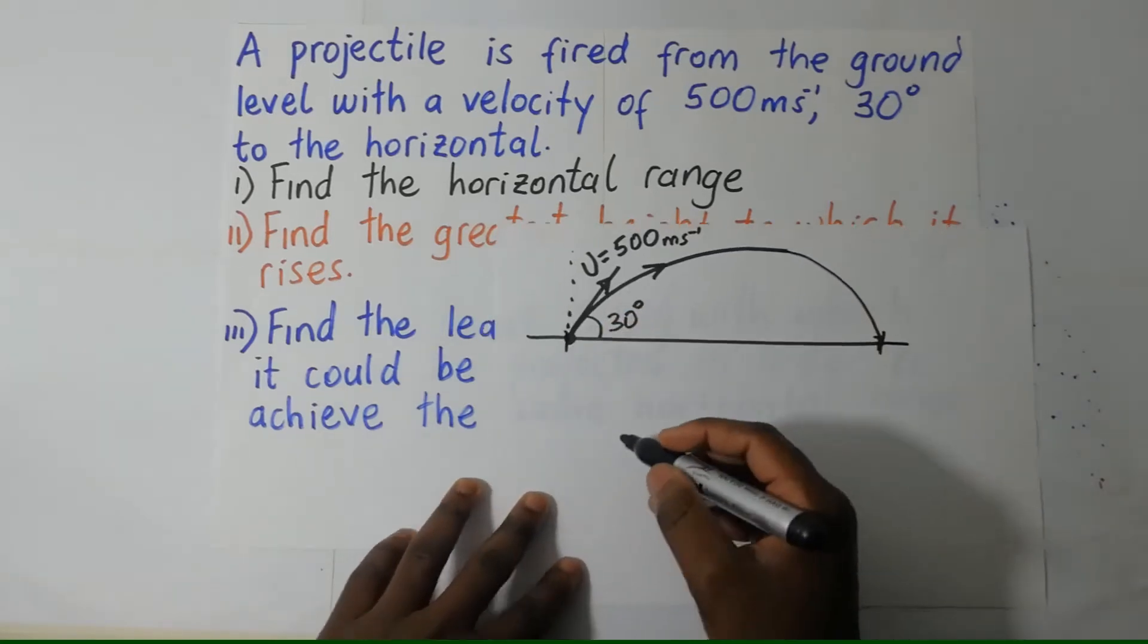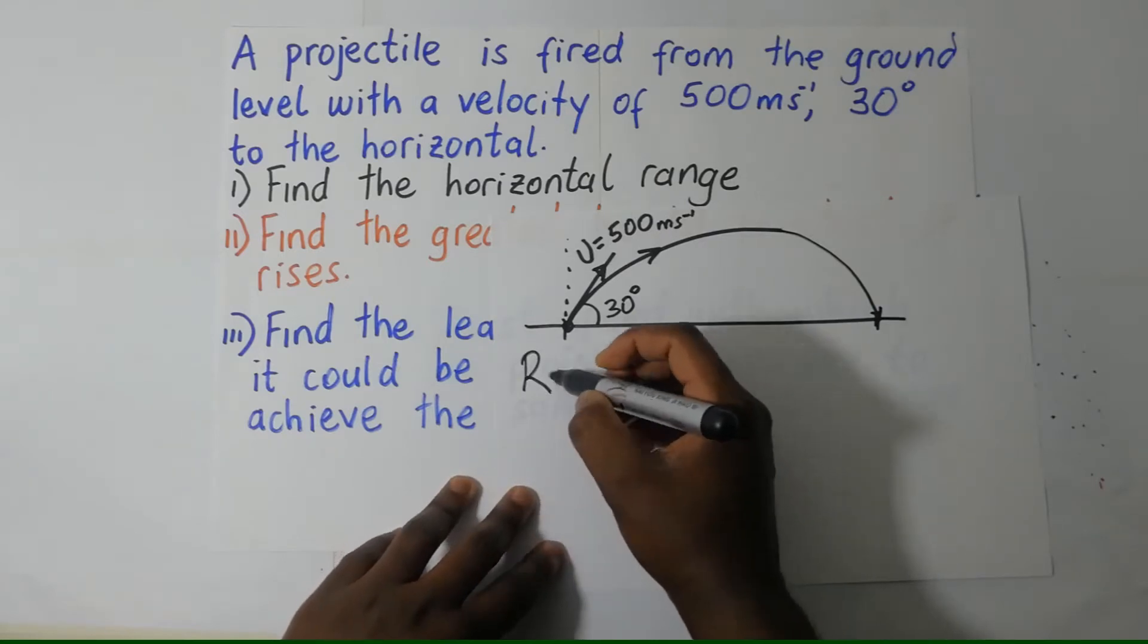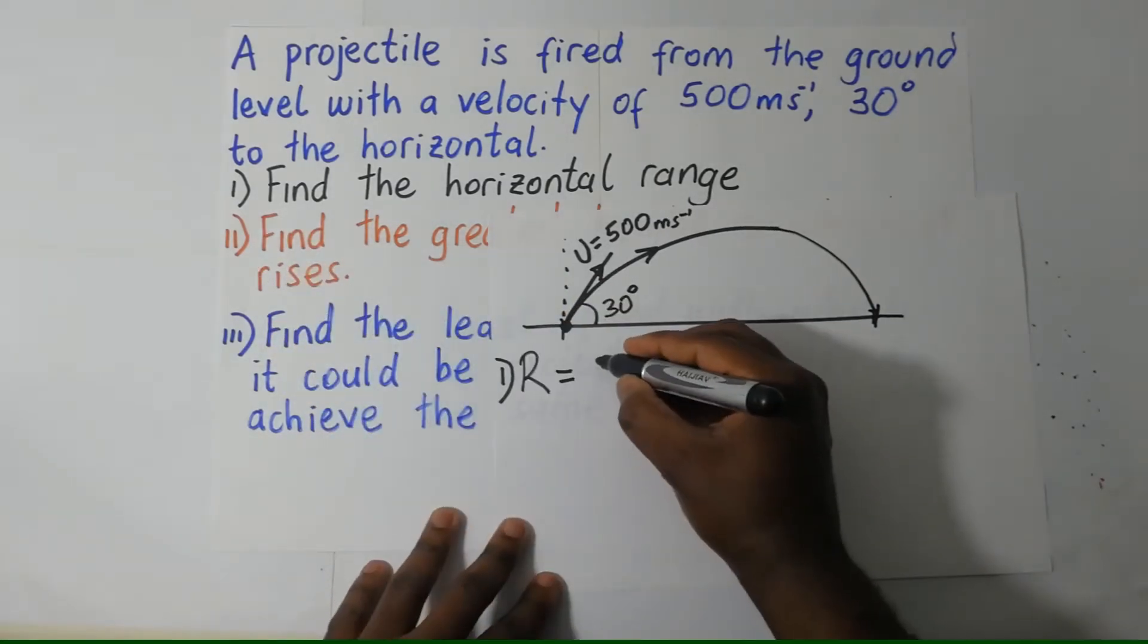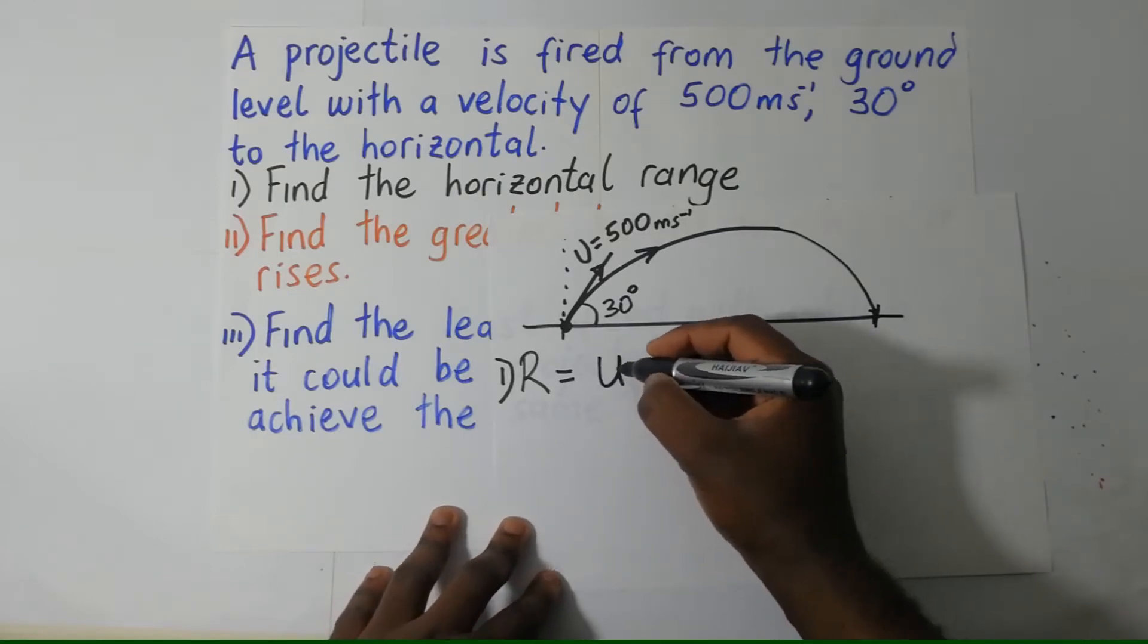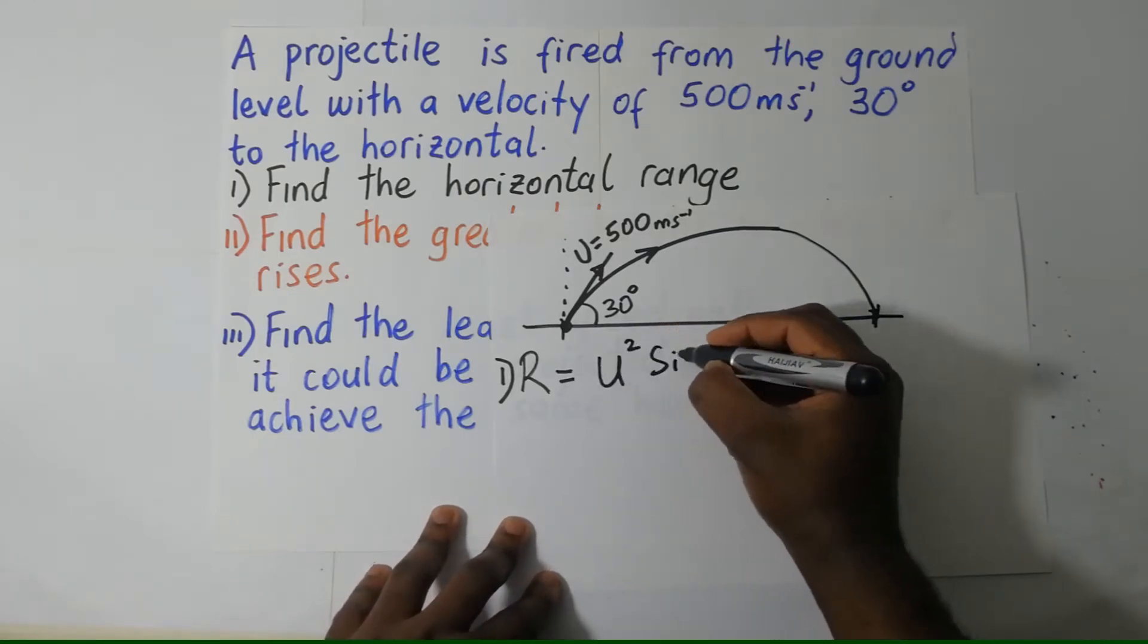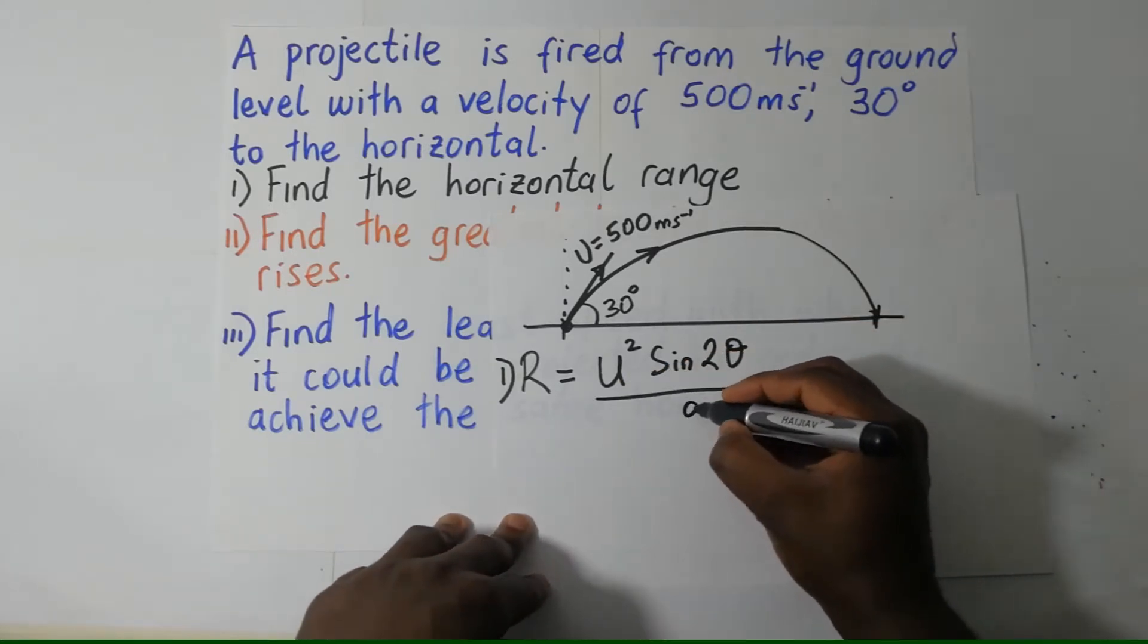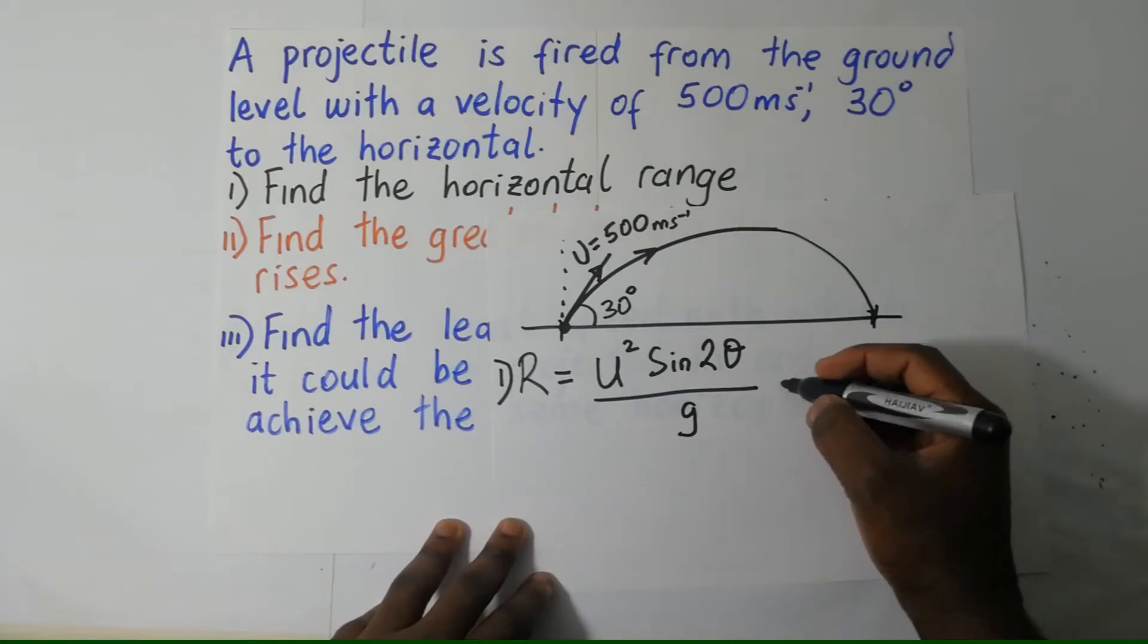Formula for horizontal range R, I'm now answering Roman 1. Formula for horizontal range is given by U squared sine 2θ divided by G. We derived these formulas in our previous sessions.